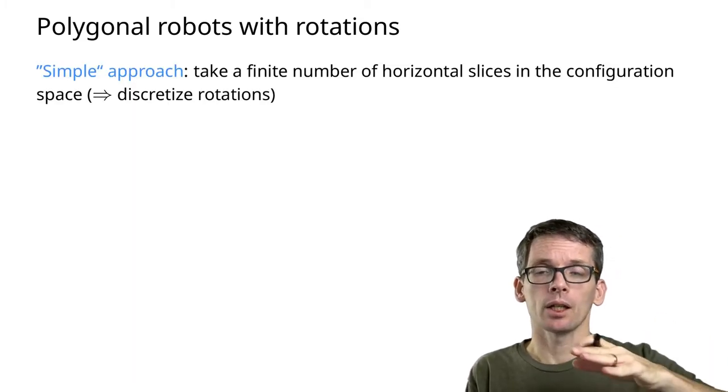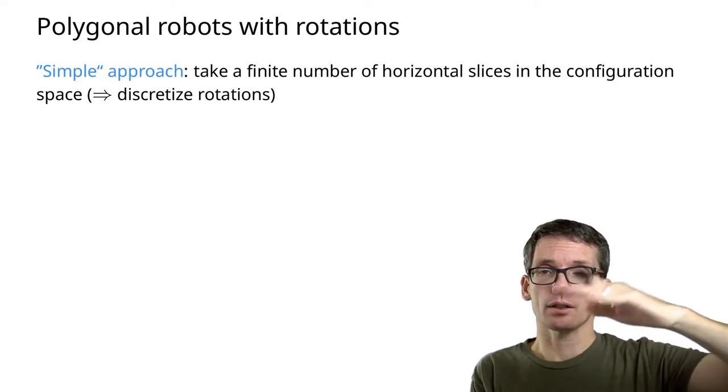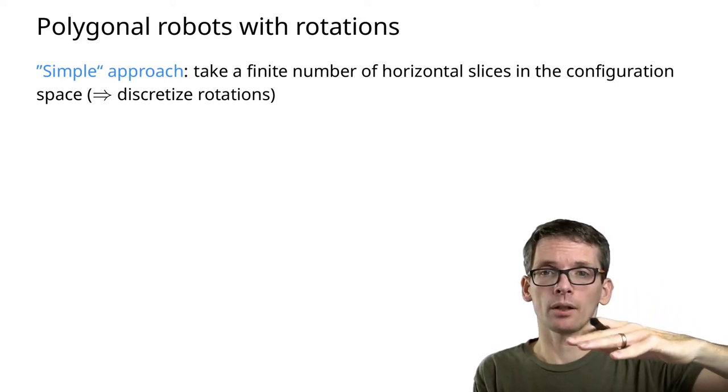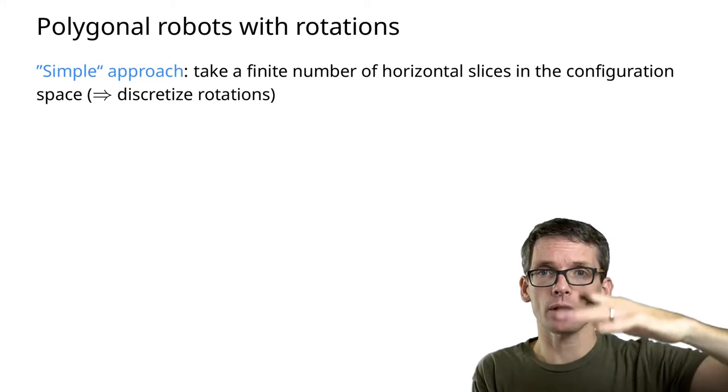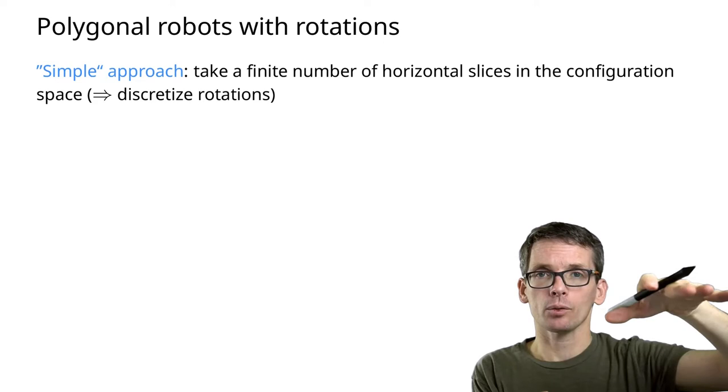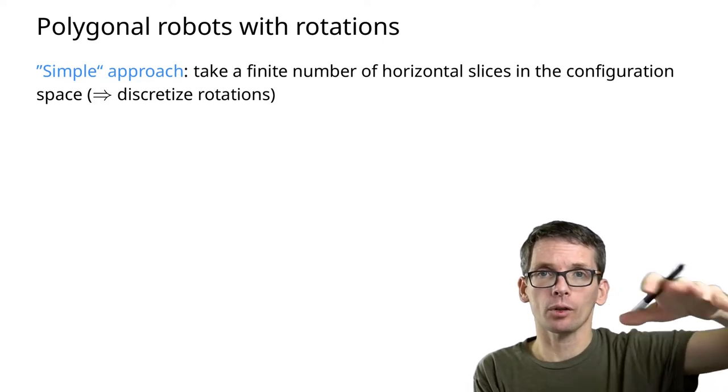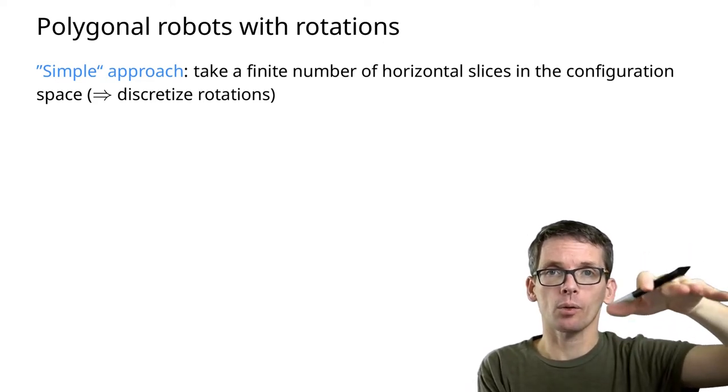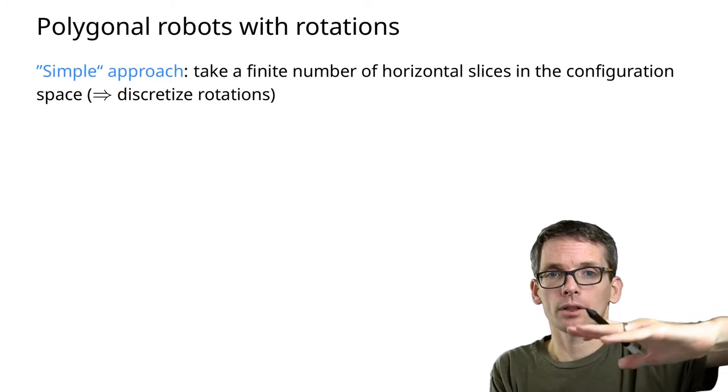A very simple approach to still compute this is the following: we simply take horizontal slices of the configuration space and then try to glue those together. That means we discretize the space of rotation.